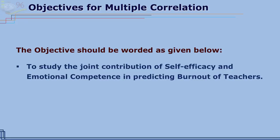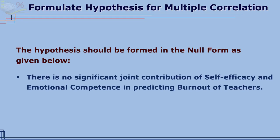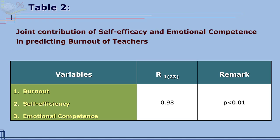The objective should be worded like this: to study the joint contribution of self-efficacy and emotional competence in predicting burnout of teachers from the SPSS output. For this objective, the null hypothesis should be formulated as: there is no significant joint contribution of self-efficacy and emotional competence in predicting burnout of teachers from the SPSS output.